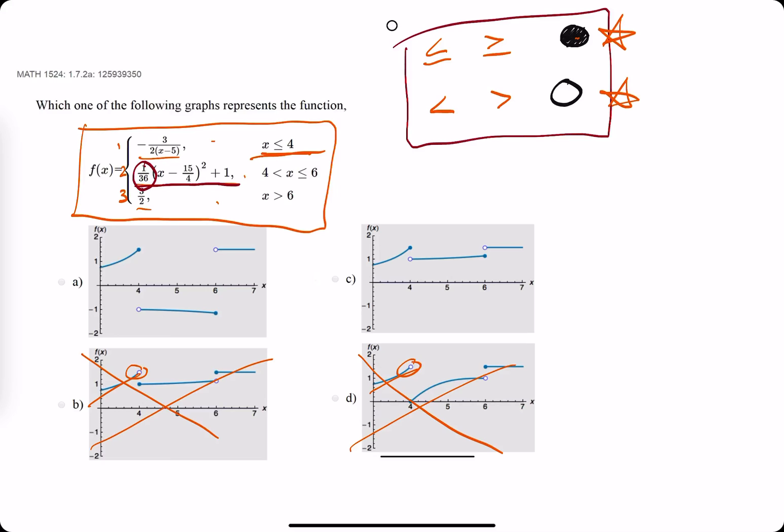The main thing I'm looking for is this 1 over 36 to tell whether it's positive or negative. If it's positive, we're looking for an increasing piece. If it's negative, we're looking for a decreasing piece.